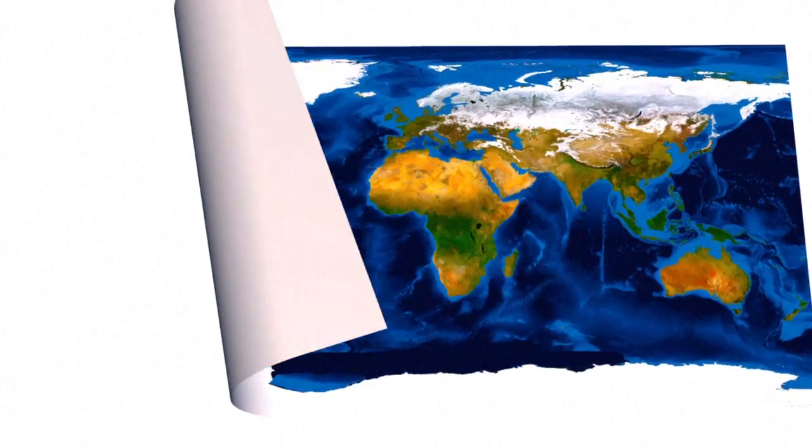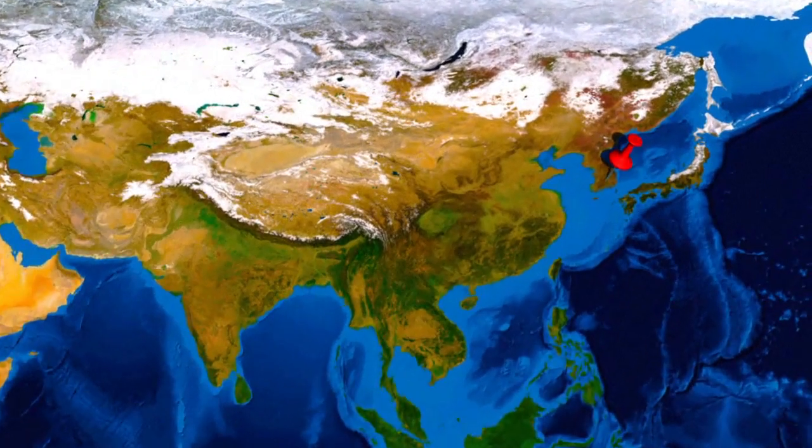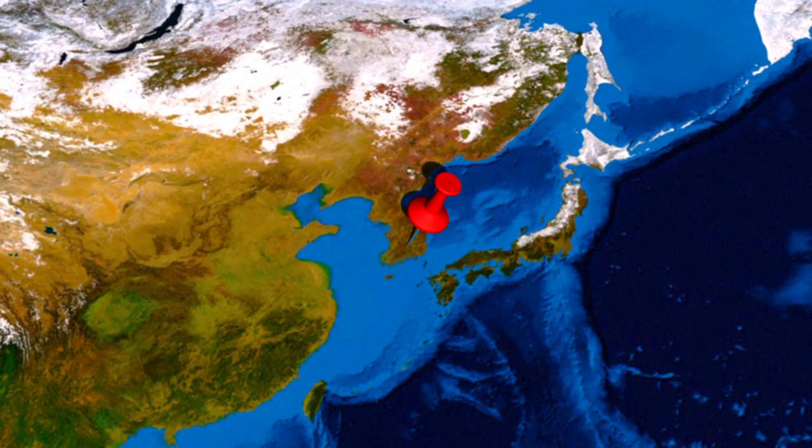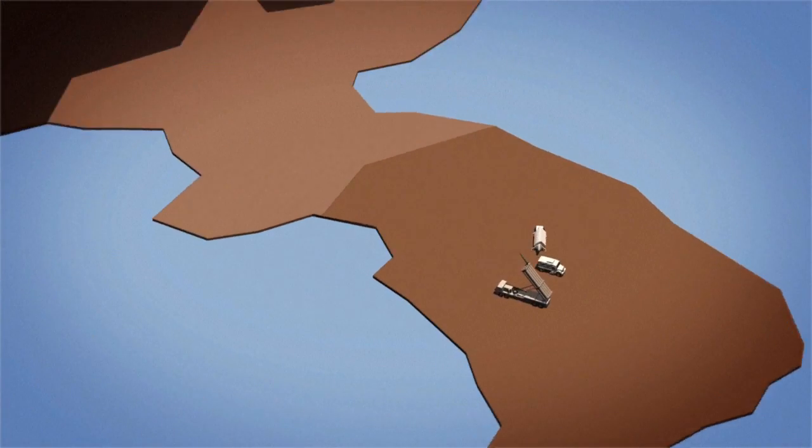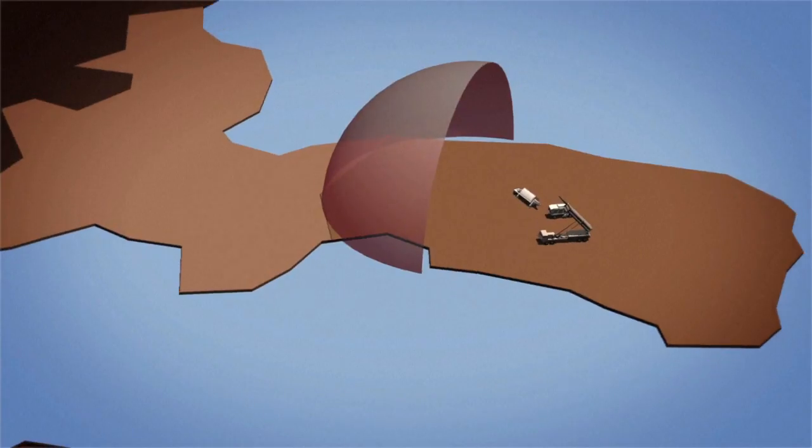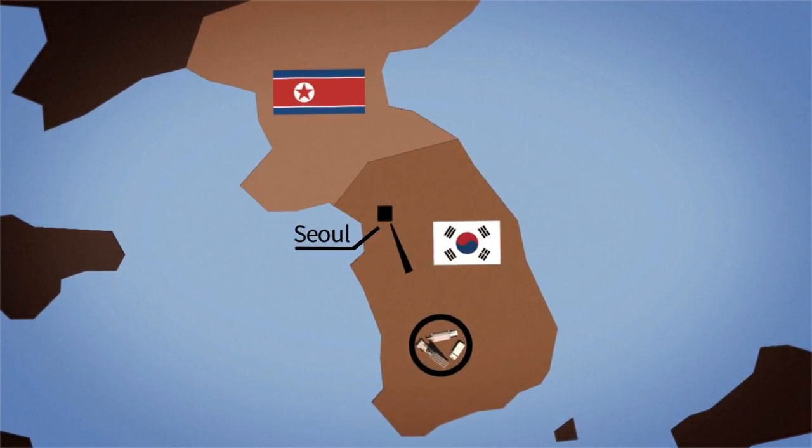The United States deployed its Terminal High Altitude Area Defense System, known as THAAD, in South Korea in 2017. The billion-dollar system is intended to guard against missile threats from the nuclear armed North. It's based in a former golf course 250 kilometers south of Seoul.